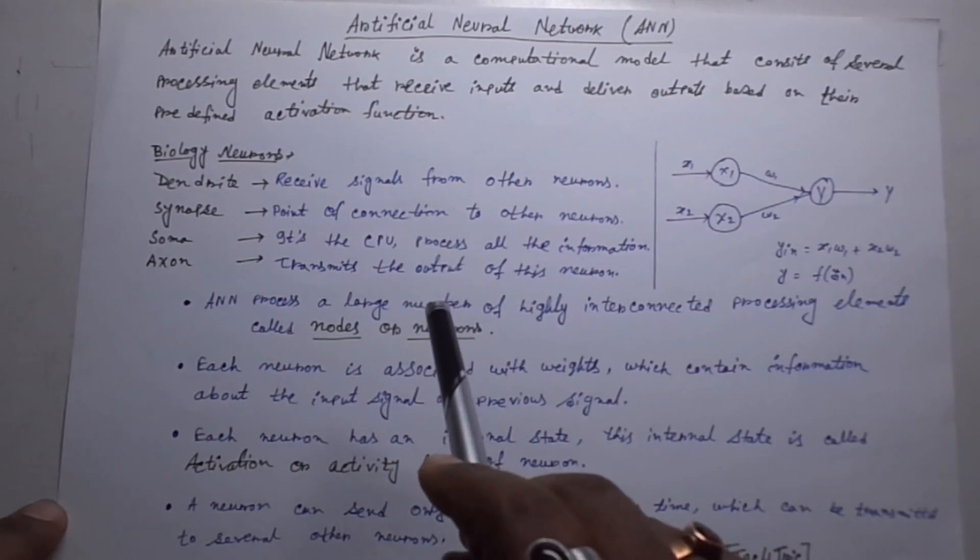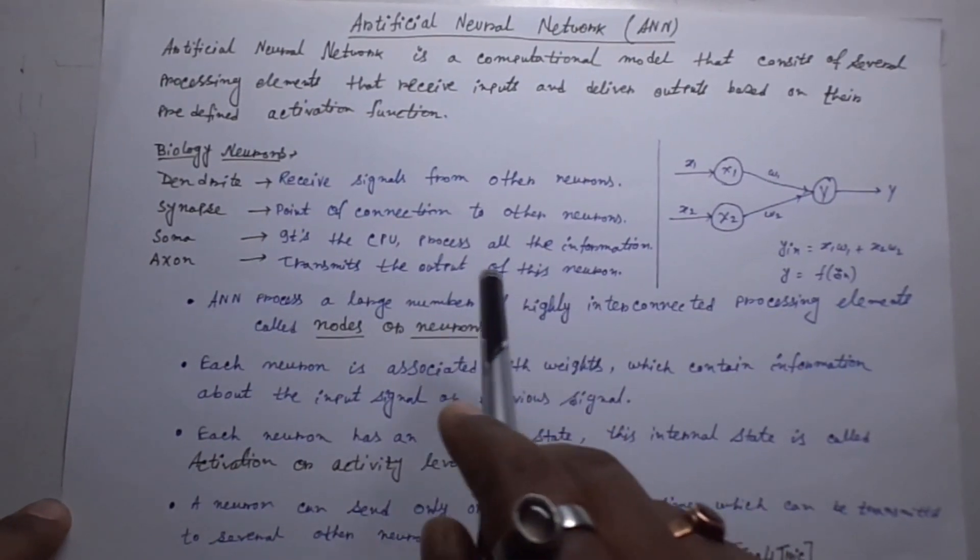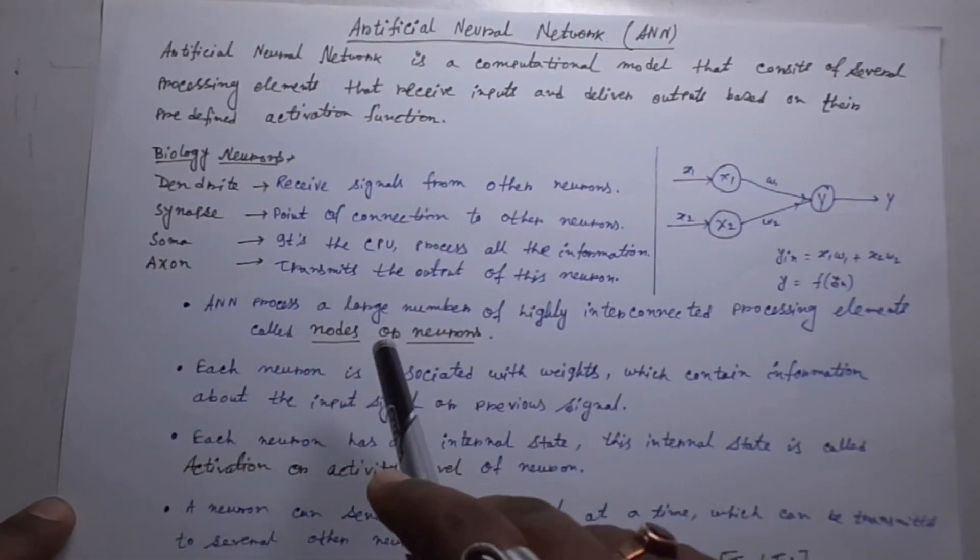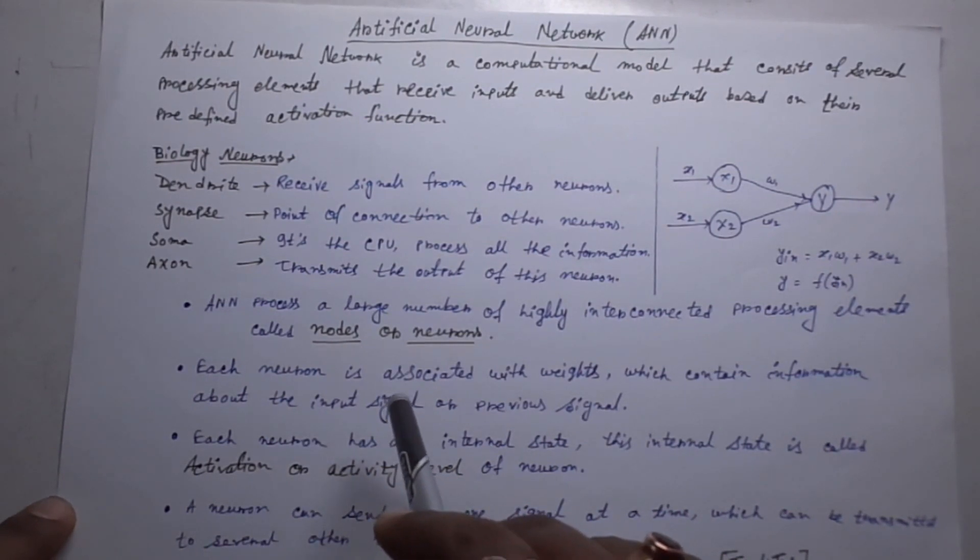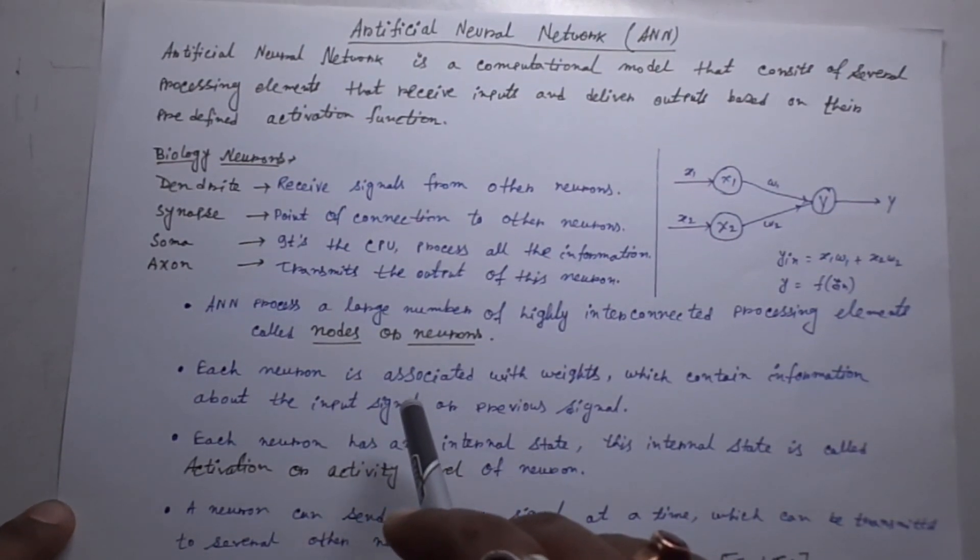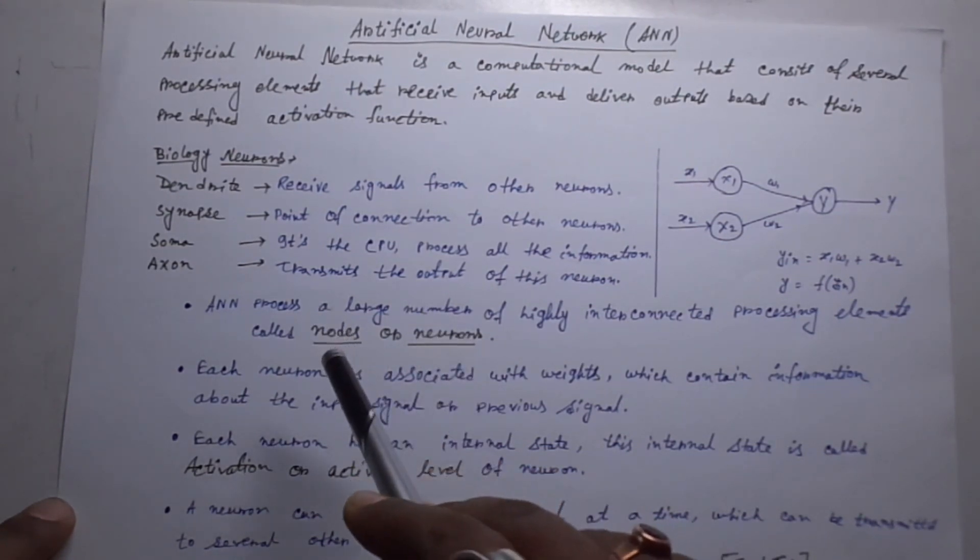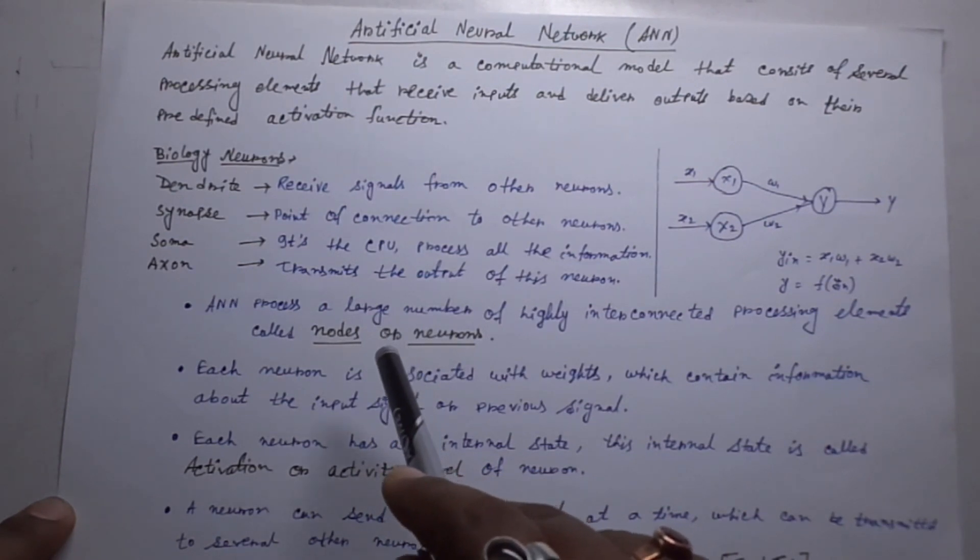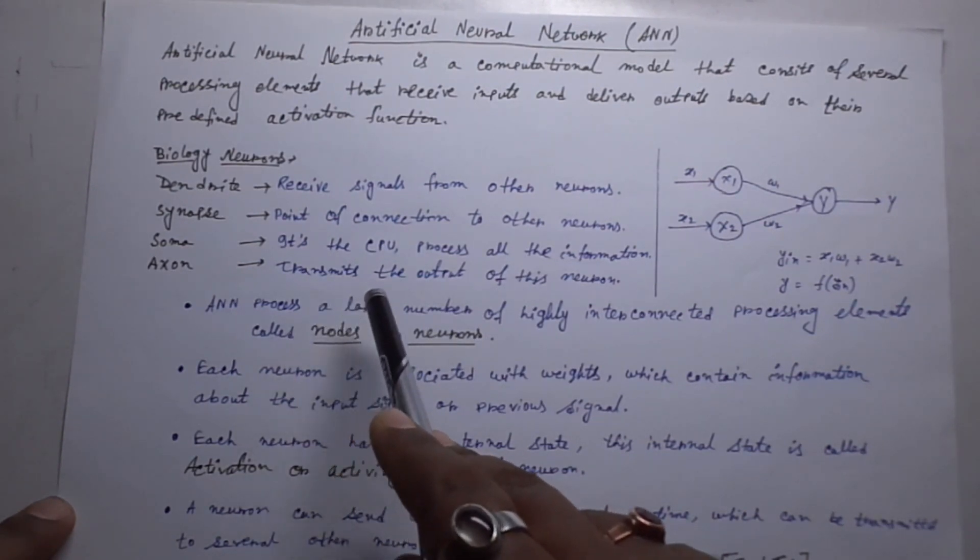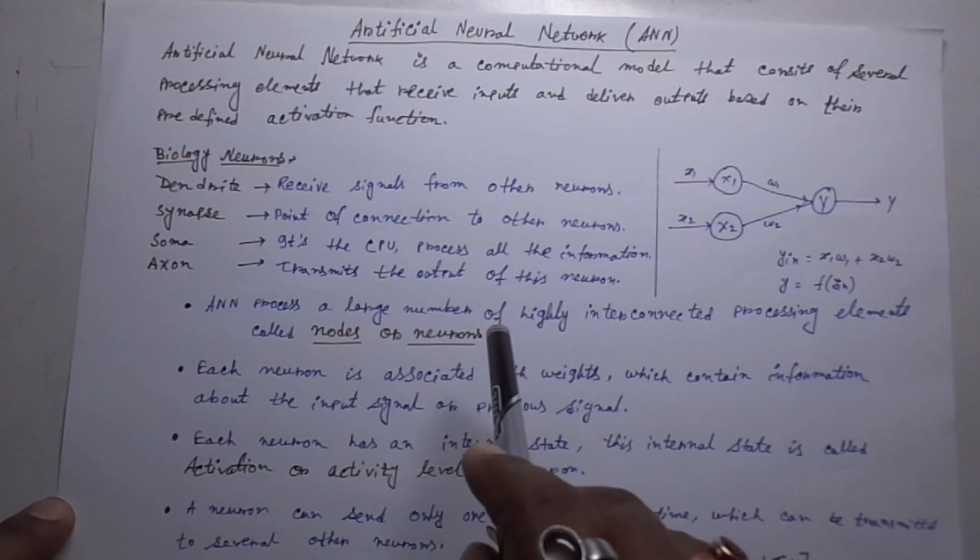The first one is Dendrite that receives signals from other neurons. The second one is Synapse. It is the point of connection to the other neurons. Then we have SOMA. It is the CPU. It processes all the information and the last axon. It transmits the output of the neurons.